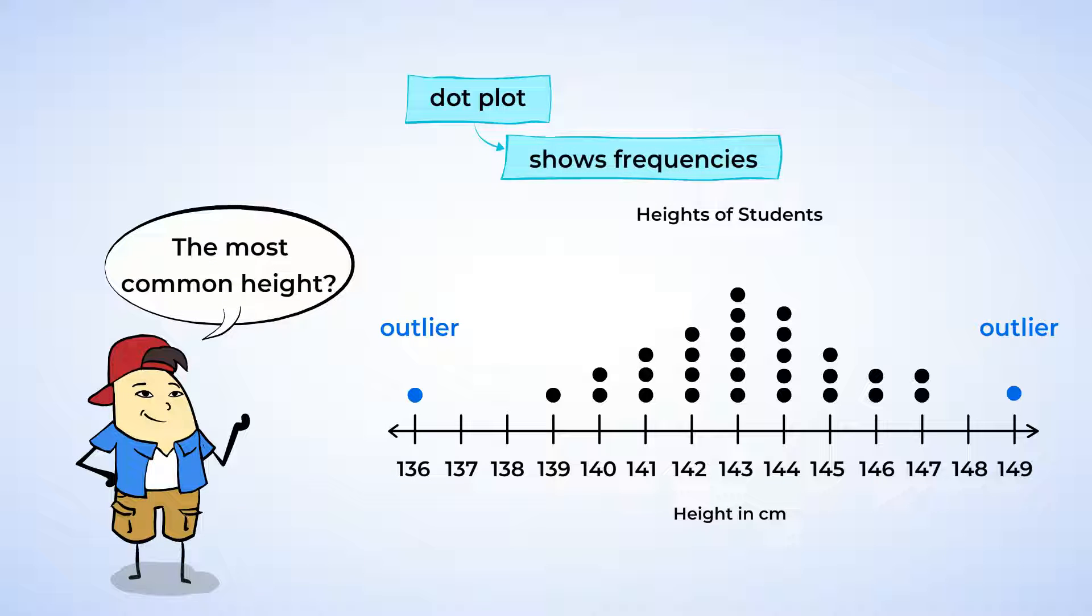A dot plot is a great way of showing frequencies. Like, what's the most common height in Chen's class? That's right, it's 143 centimeters. But dot plots aren't the only way to represent this information.